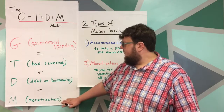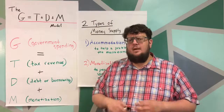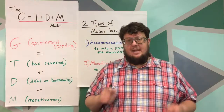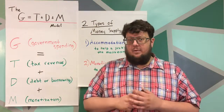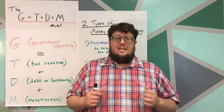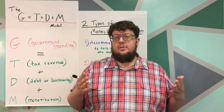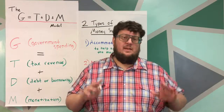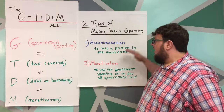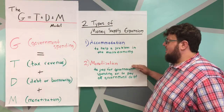Let's look a little bit deeper into M, which is monetization. There's a lot of confusion out there about this, and that's why I want to go over it in more detail. When the government is printing money, they do it for two main reasons: accommodation and monetization.